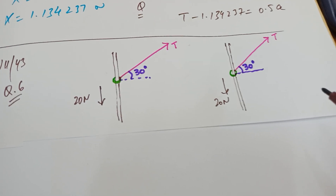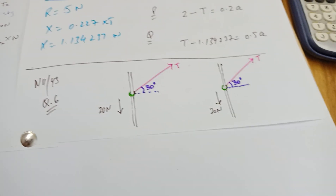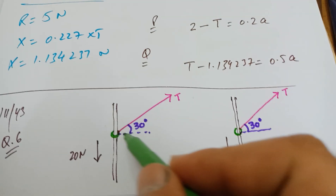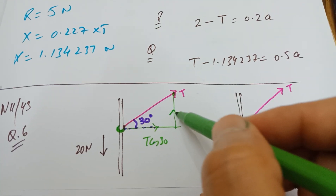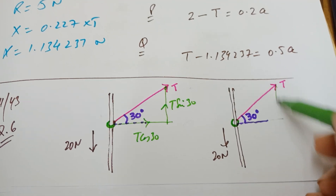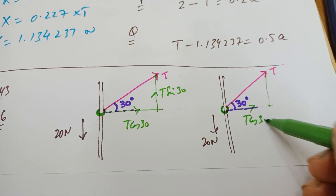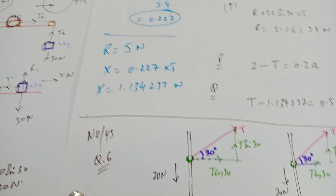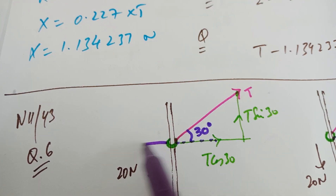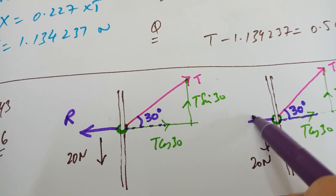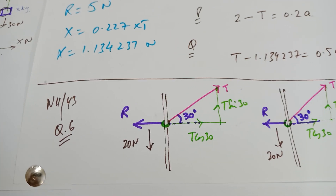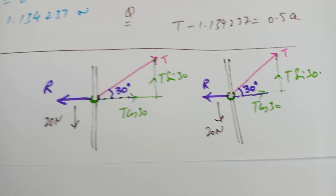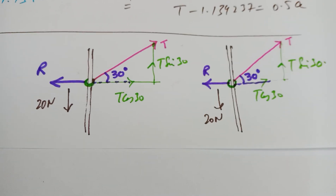A light string is attached to the ring and is pulled upwards at an angle of 30 degrees. Resolving quickly: the horizontal component is T cos 30 and the vertical component is T sin 30. Here is R, the normal contact force. Whenever two surfaces are in contact you must determine the normal contact force and the frictional component of that force.